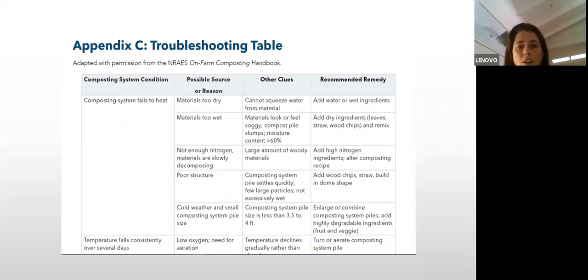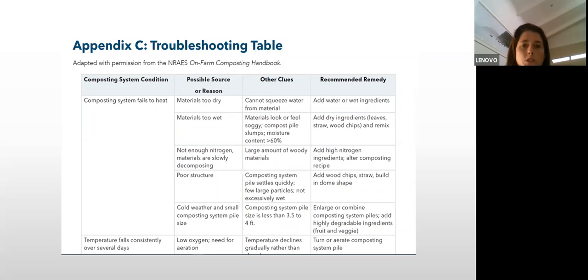Troubleshooting tables for composting are really valuable. They look at symptoms and give you a diagnosis of what the problem is. For example, if your composting system is not heating up, there are several reasons: materials too dry, too wet, not enough nitrogen, poor structure, too cold, or the pile is too small. You can analyze clues — if you can't squeeze any water from the material, it's obviously too dry — and apply the correct remedy. There's a table in the best practices document to help.